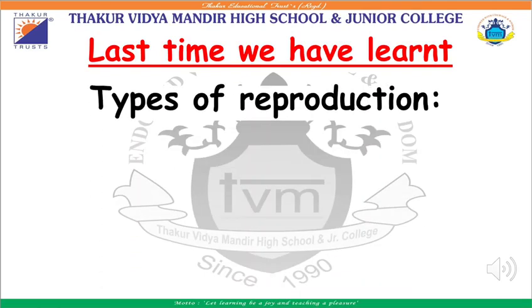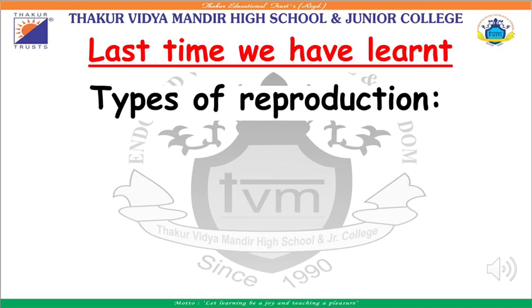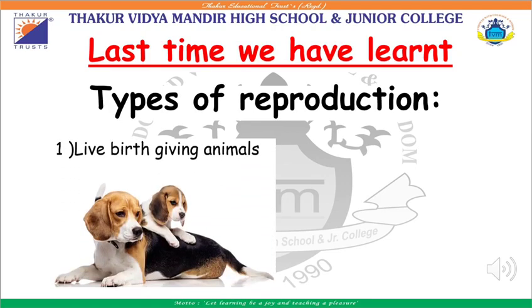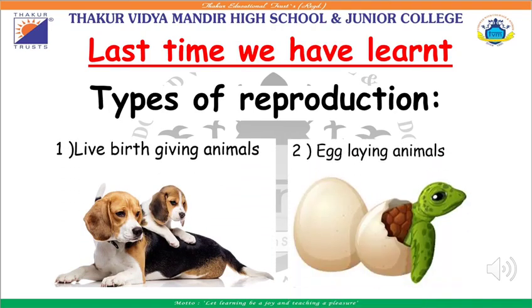We saw that reproduction in animals takes place in two ways: first, either by giving birth to young ones, or second, by laying eggs.